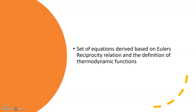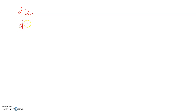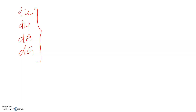In order to derive Maxwell's thermodynamic relations you have to know the differential mathematical expressions for internal energy, enthalpy, Gibbs free energy, and Helmholtz free energy. That is, you have to know what dU, dH, dA, and dG are mathematically. Only from these differential equations for these functions can you derive Maxwell's relations.